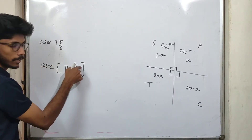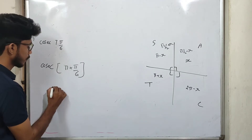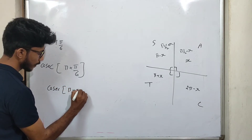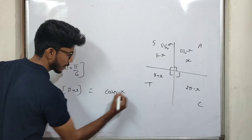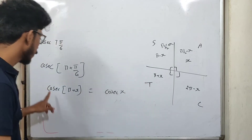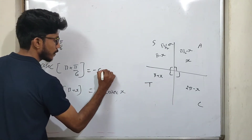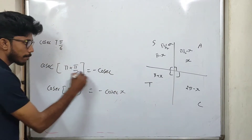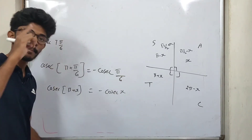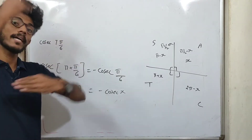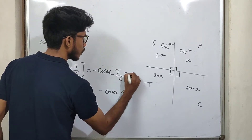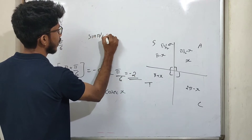Cosec(7π/6) equals cosec(π + π/6). Because 6π/6 plus π/6 is 7π/6. We will apply the cosec formula. The formula for cosec(π + x) gives cosec x. In this case, since it is π plus x, cosec is negative. So cosec(7π/6) equals negative cosec(π/6), which equals negative 2.